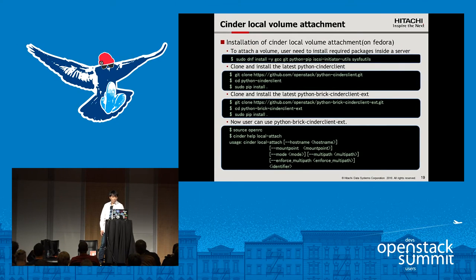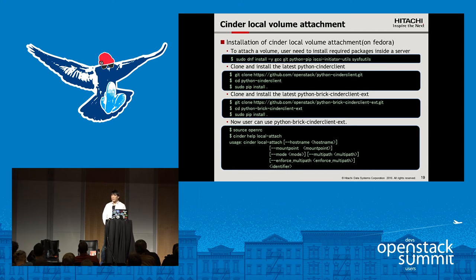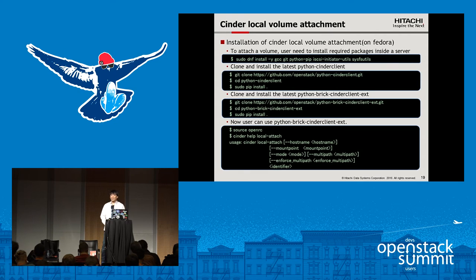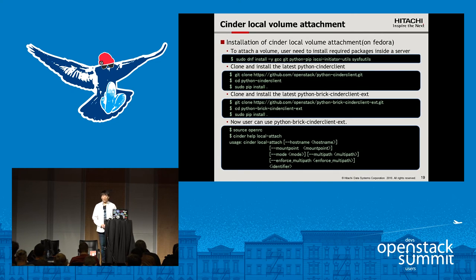Here is an example of installation and execution of the extension client. First, the user needs to install related packages such as pip, iSCSI initiator, and so on. Then the user needs to install the Cinder client and also the brick Cinder client extension on the target server. After that, the user can use the Cinder local volume attachment functionality. The arguments are hostname, mount point, mount mode, and volume name or volume ID.